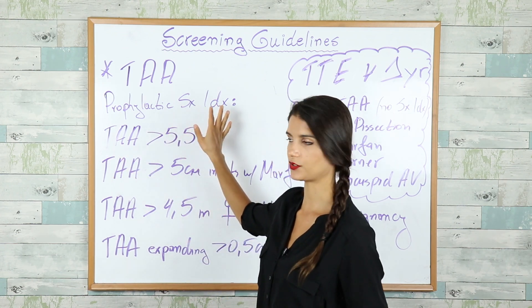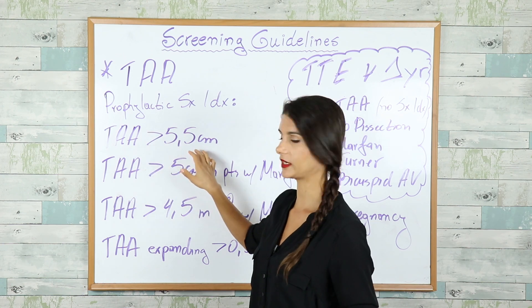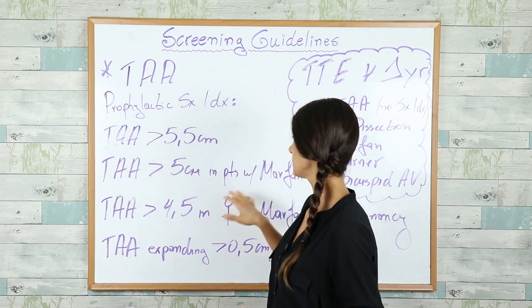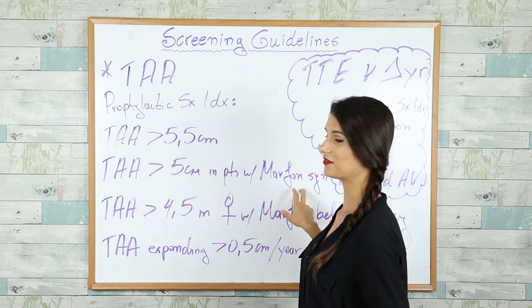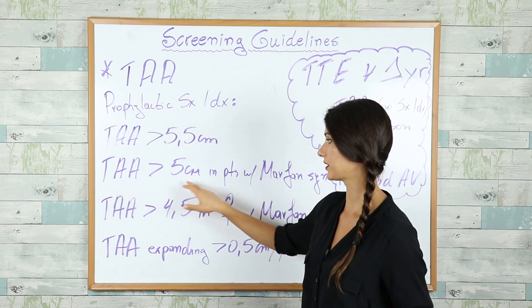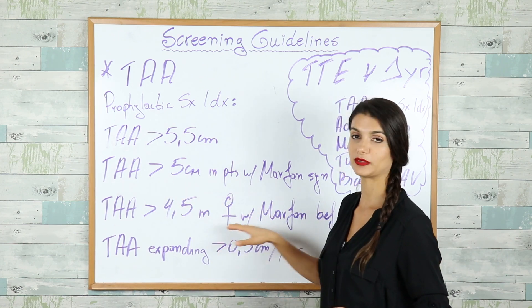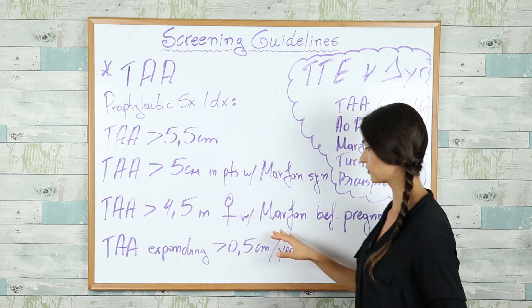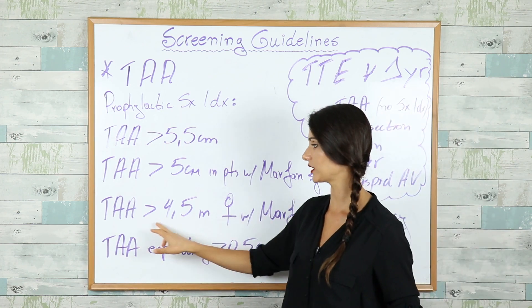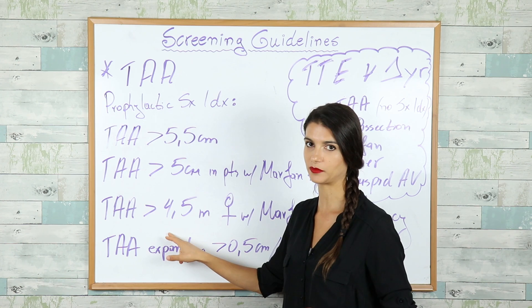So, who gets the prophylactic surgery? People with TAA more than 5.5 cm in diameter. People with Marfan syndrome and TAA more than 5 cm in diameter. Women with Marfan syndrome before pregnancy with TAA more than 4.5 cm in diameter.